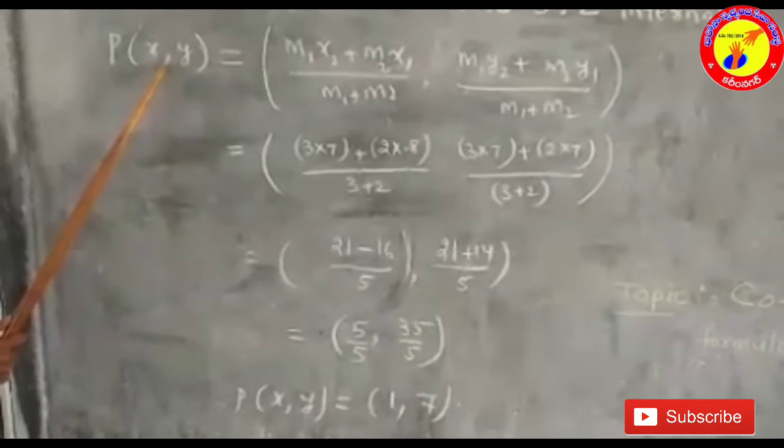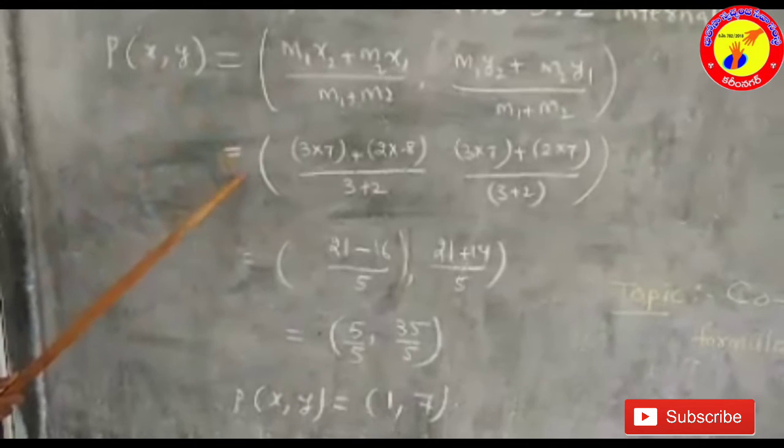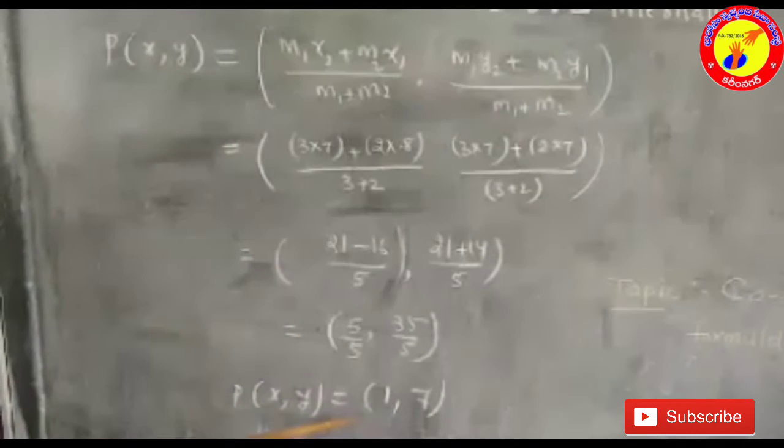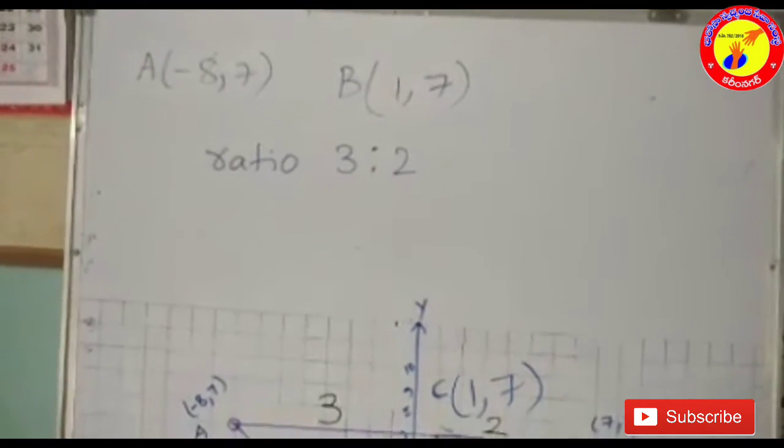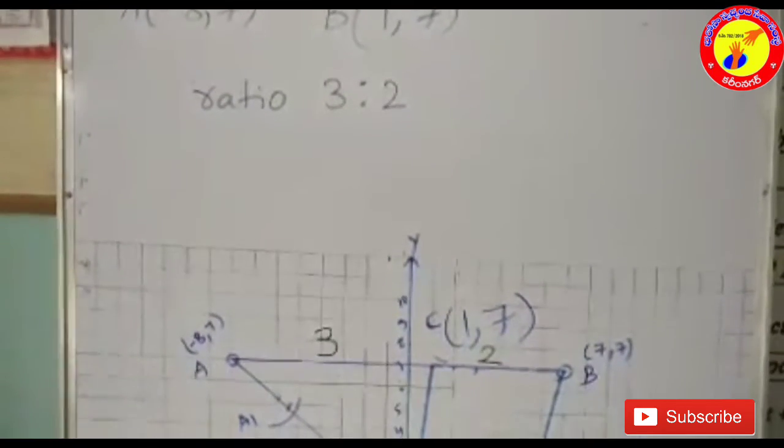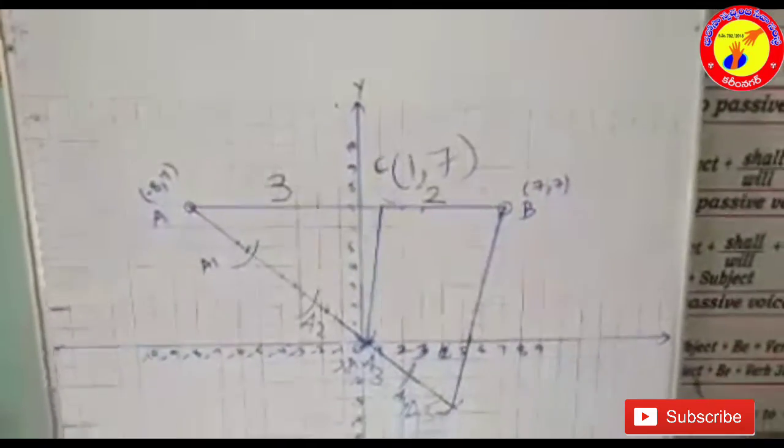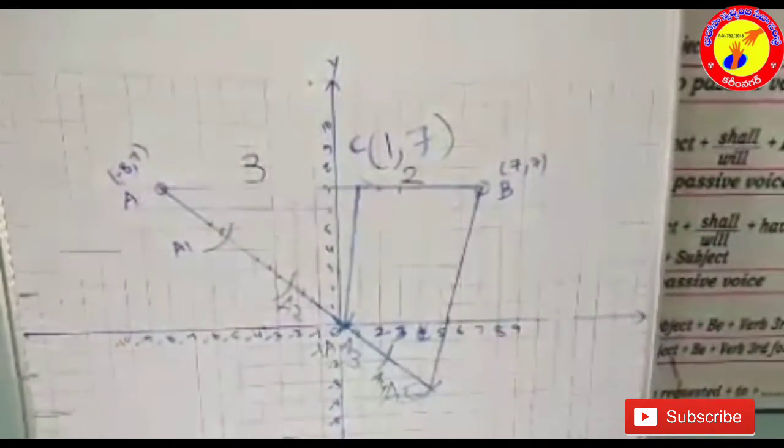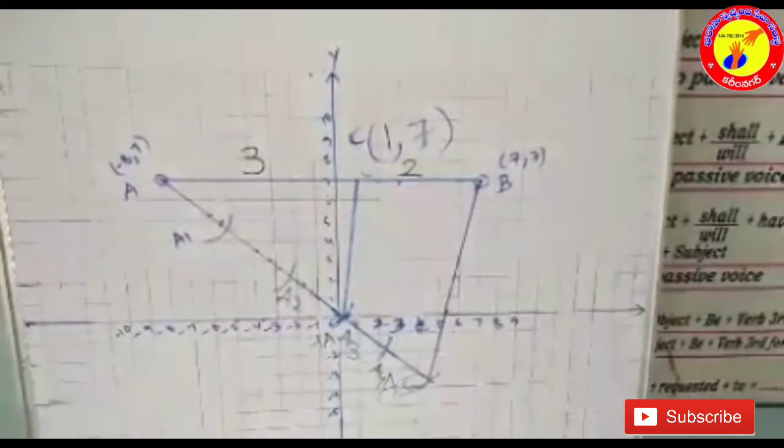As we know the process to solve the given example by using section formula. In this method, first I plotted given points on the graph board and joined them. Now I divide A-B line segment in 3:2 ratio according to steps given in our textbook using Thales theorem.